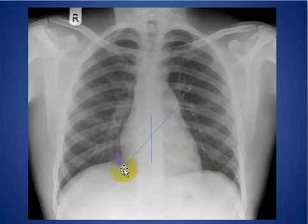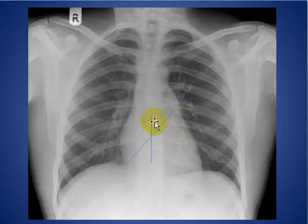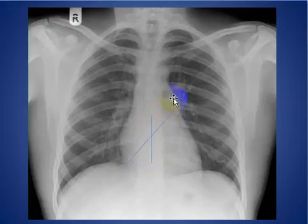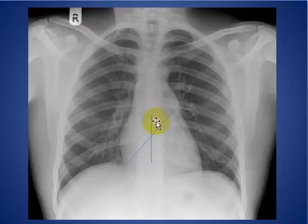First, we draw a line from the right cardiophrenic angle to the left hilum. The valve located above that line is either the aortic valve or the pulmonary valve. The valve located below this line is either the mitral valve or the tricuspid valve. Then we draw another line, vertical to the midline of the spine. The valve located in the superior aspect is the pulmonary valve, and if it is located a little bit lower, it is the aortic valve.